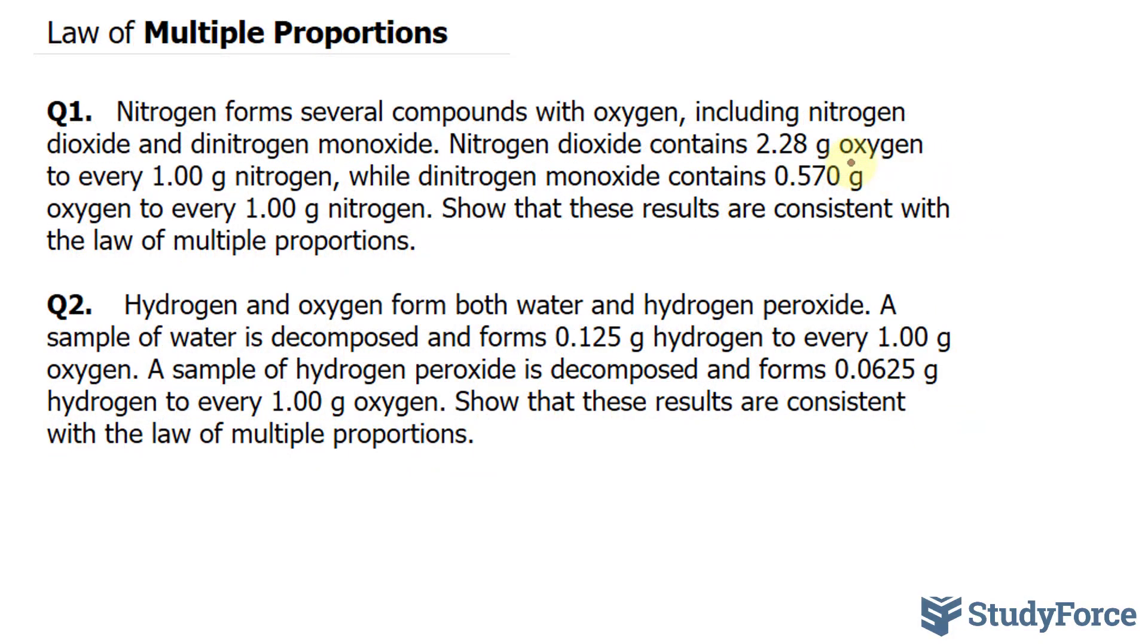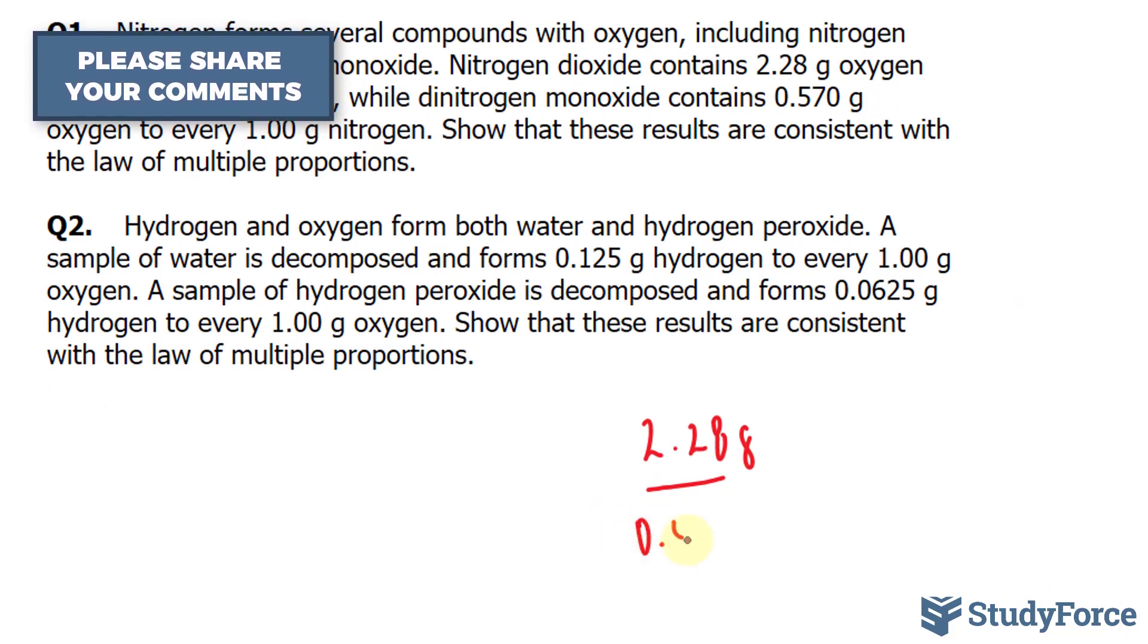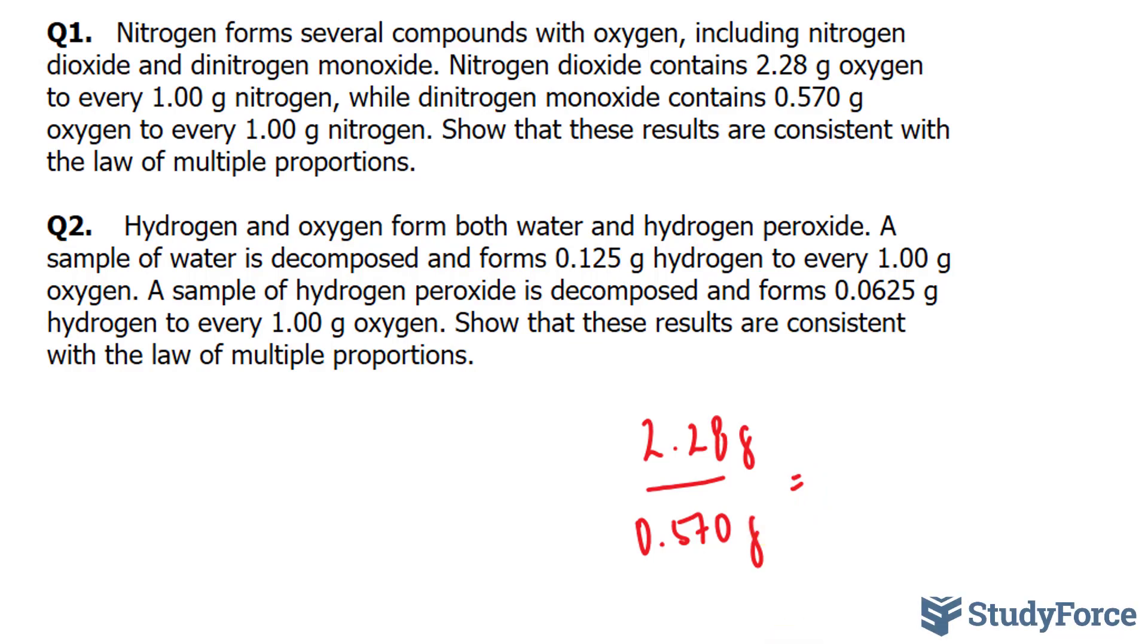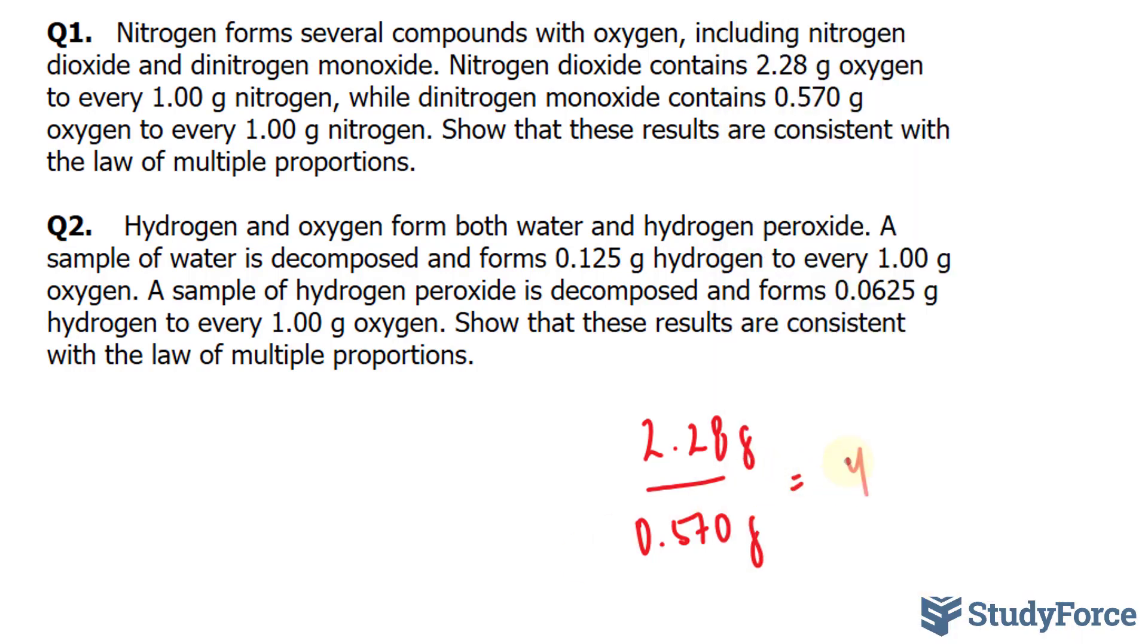Let's go ahead and do that. We'll compare the larger of the two masses with the smaller of the two. So I'll take 2.28 grams of oxygen found in this compound to 0.57 in the other. So if I take 2.28 and divide it by 0.57, I should end up with 4. The ratio that you see is a small whole number. Therefore, these results are consistent with the law of multiple proportions.